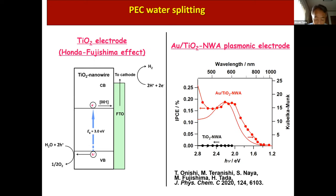This figure shows the incident photon to current conversion efficiency, IPCE, action spectra. As you can see, the TiO2 electrode hardly responds to visible light. On the other hand, the Au/TiO2 plasmonic electrode responds to visible to near-infrared light at photon energies larger than 1.5 eV.